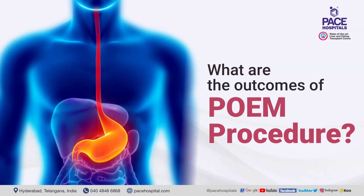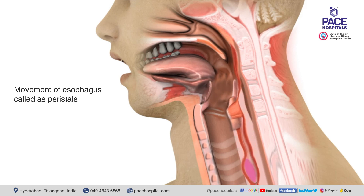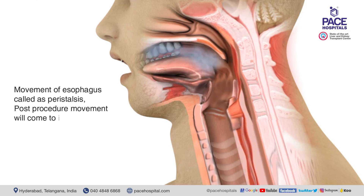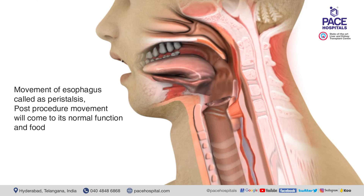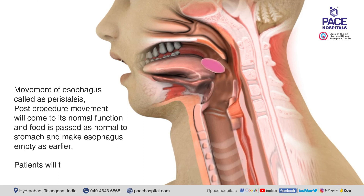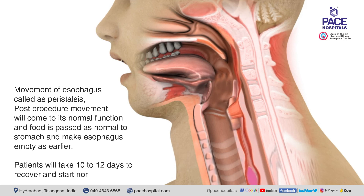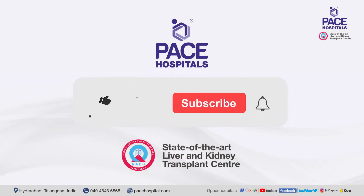What are the outcomes of the POEM procedure? Post-procedure, movement of the esophagus — called peristalsis — returns to its normal function, and food passes normally to the stomach, making the esophagus empty as before. Patients typically take 10 to 12 days to recover and start a normal diet.